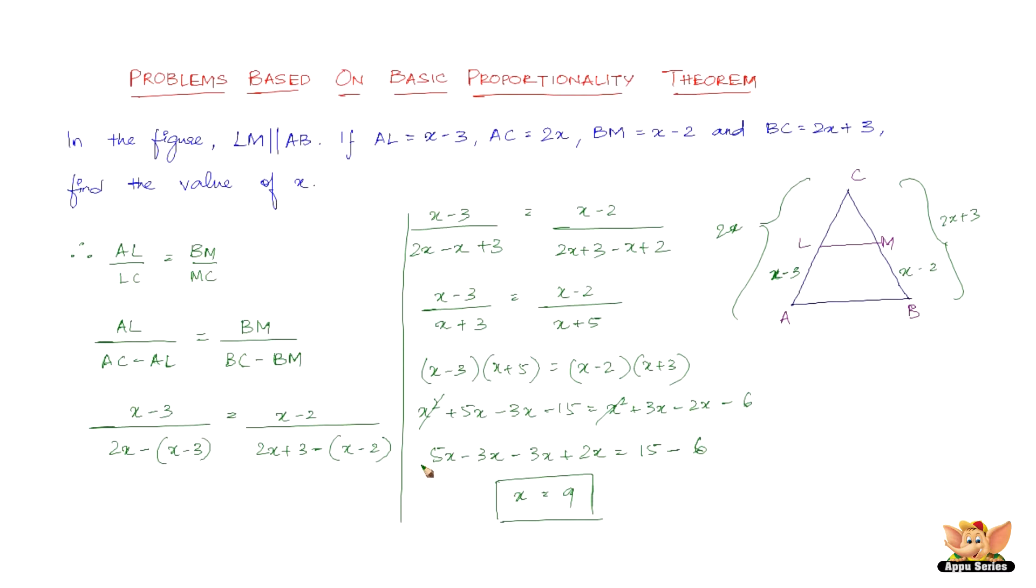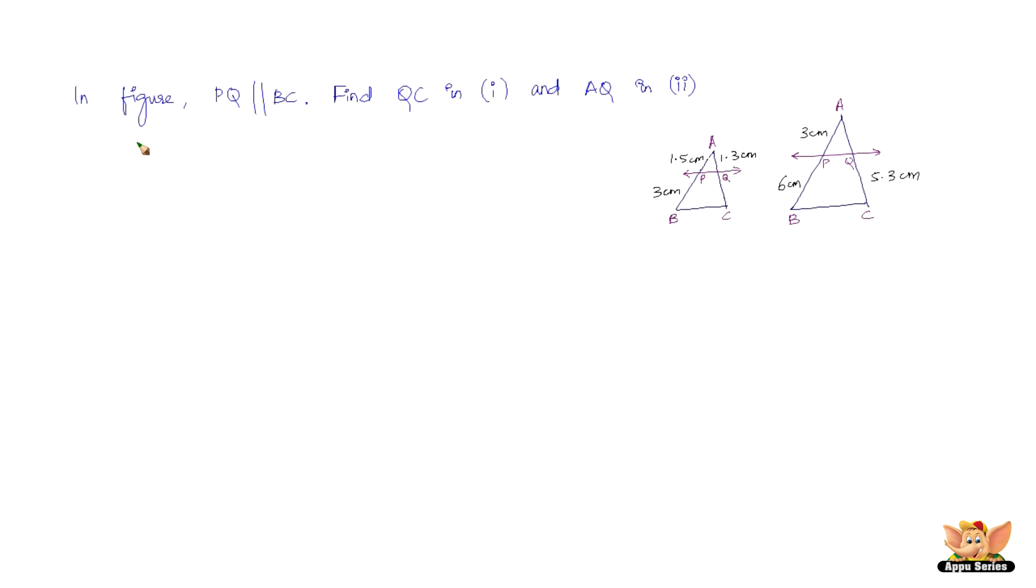Pretty simple, not very complicated. Let us quickly solve another problem. Here we have a problem: In the figure, PQ is parallel to BC in both cases. Find QC in figure 1 and AQ in figure 2. This is a very basic problem based on the basic proportionality theorem.